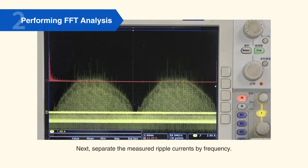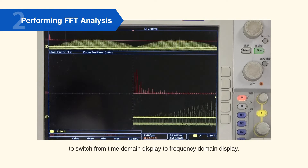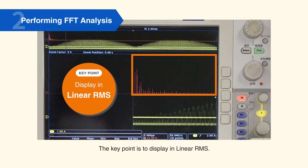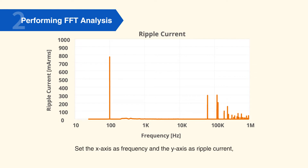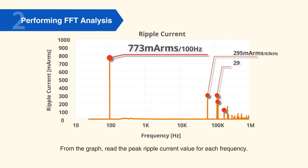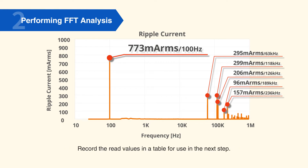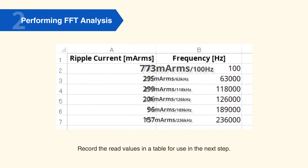Next, separate the measured ripple currents by frequency. Use the oscilloscope FFT calculation function to switch from time domain display to frequency domain display. The key point is to display in linear RMS. Output the displayed graph in a format such as CSV, and open the file in spreadsheet software. Set the x-axis as frequency and the y-axis as ripple current, then use the graph function to create a scatterplot graph. From the graph, read the peak ripple current value for each frequency.